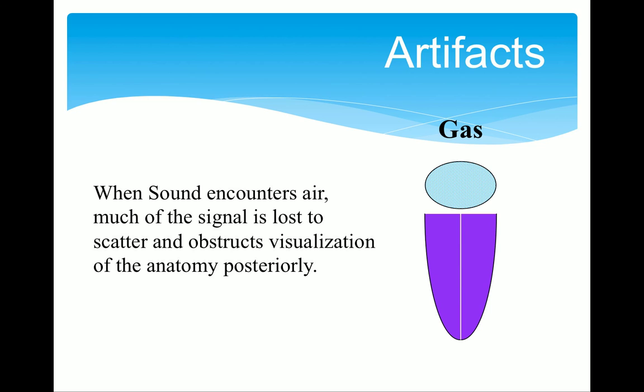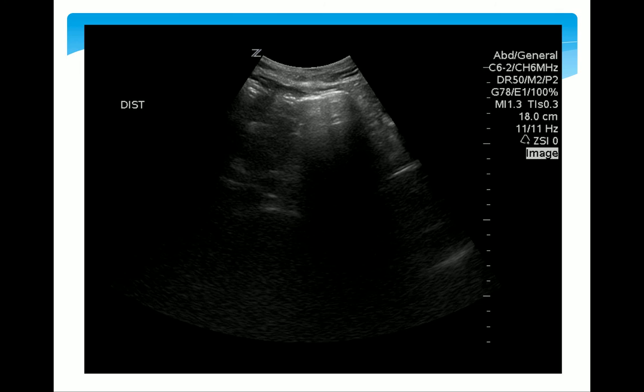One artifact we don't like is called scatter. Gas is our worst enemy — it creates scattering and we can't get any echoes from the tissue deep to the gas. Here's a nice image of gas scatter: there's gas in the intestine and we get what we call dirty shadows behind it, and we can't really see anything.